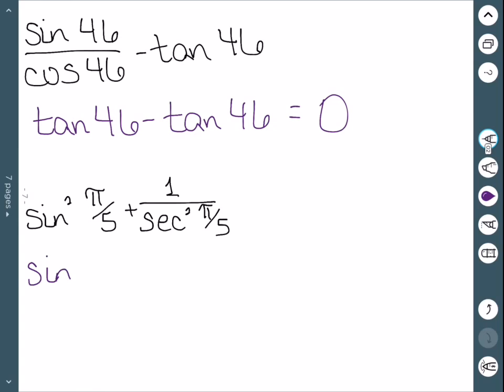For the second one, we want to reduce this fraction. And 1 over secant is cosine. So this is cosine squared of pi over 5. And my Pythagorean identities said that cosine squared plus sine squared is always equal to 1.